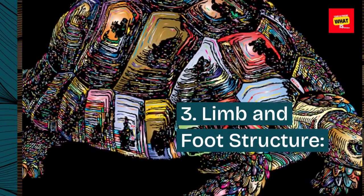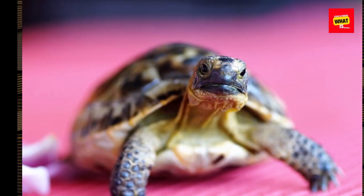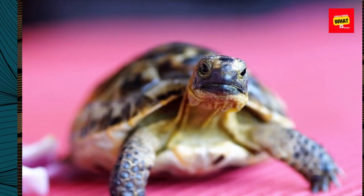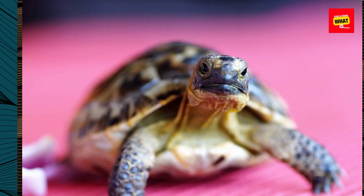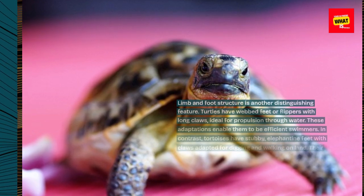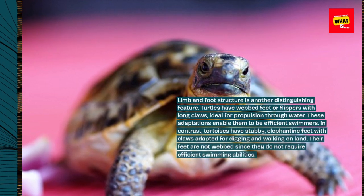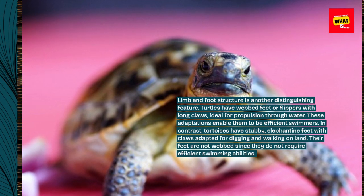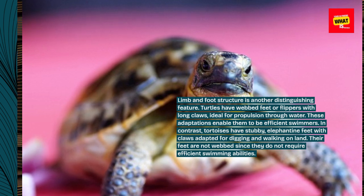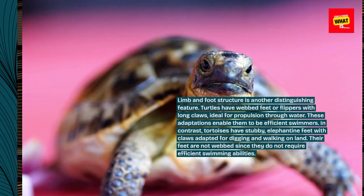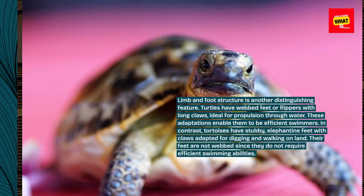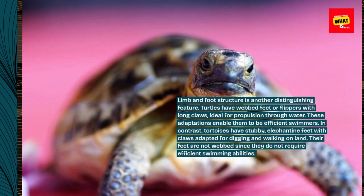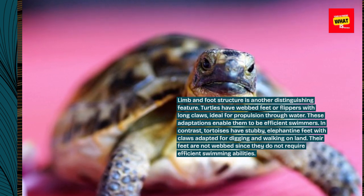Limb and Foot Structure: Limb and foot structure is another distinguishing feature. Turtles have webbed feet or flippers with long claws, ideal for propulsion through water. These adaptations enable them to be efficient swimmers. In contrast, tortoises have stubby, elephantine feet with claws adapted for digging and walking on land. Their feet are not webbed since they do not require efficient swimming abilities.